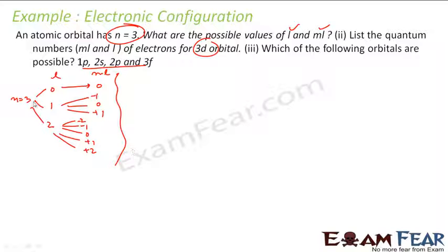So (3, 0, 0) is one possible combination; (3, 1, −1) is one possible combination; (3, 1, 0) is again one possible combination; (3, 1, 1) is one possible combination; (3, 2, −1) is one possible combination.